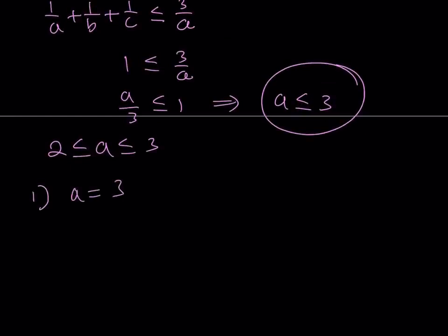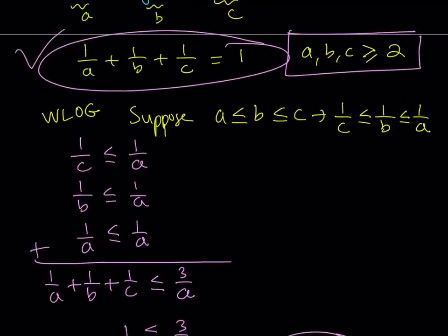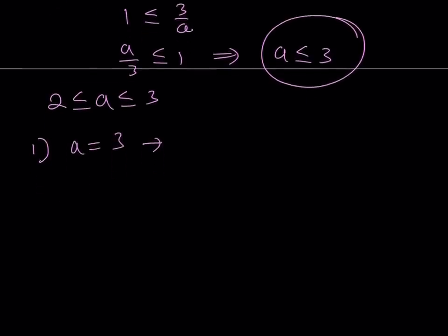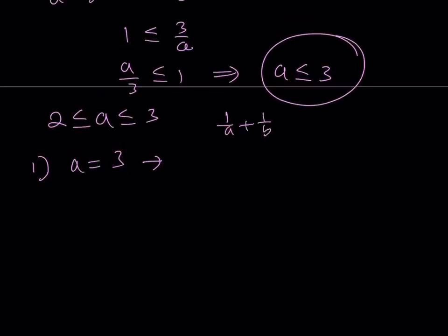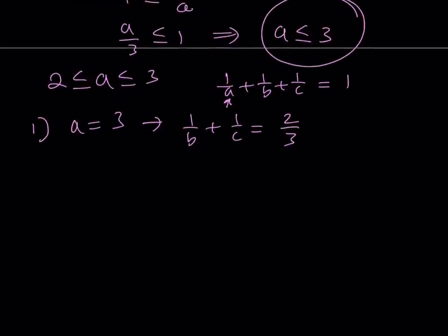Let's go ahead and take a look at A equals 3 first. If A is equal to 3, if you substitute in this equation — the sum of reciprocals equals 1 — then I can subtract 1 over 3 from 1, and I get 1 over B plus 1 over C is equal to 1 minus 1 third, which is 2 thirds. This equation can be solved. Let me get into a little bit of details here. We can make a common denominator because we're going to be using something really cool, and that is actually called Simon's Favorite Factoring Trick.